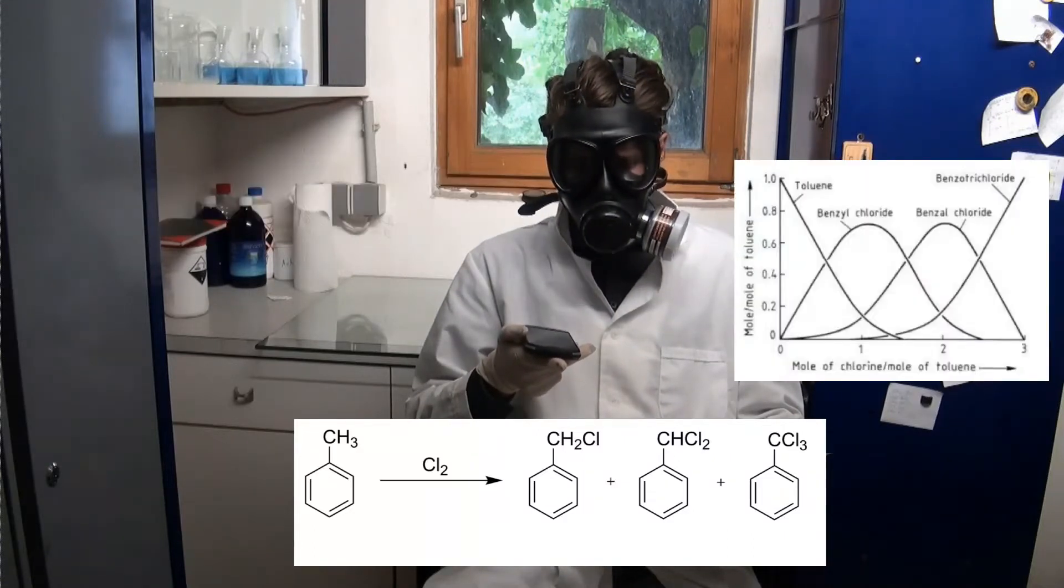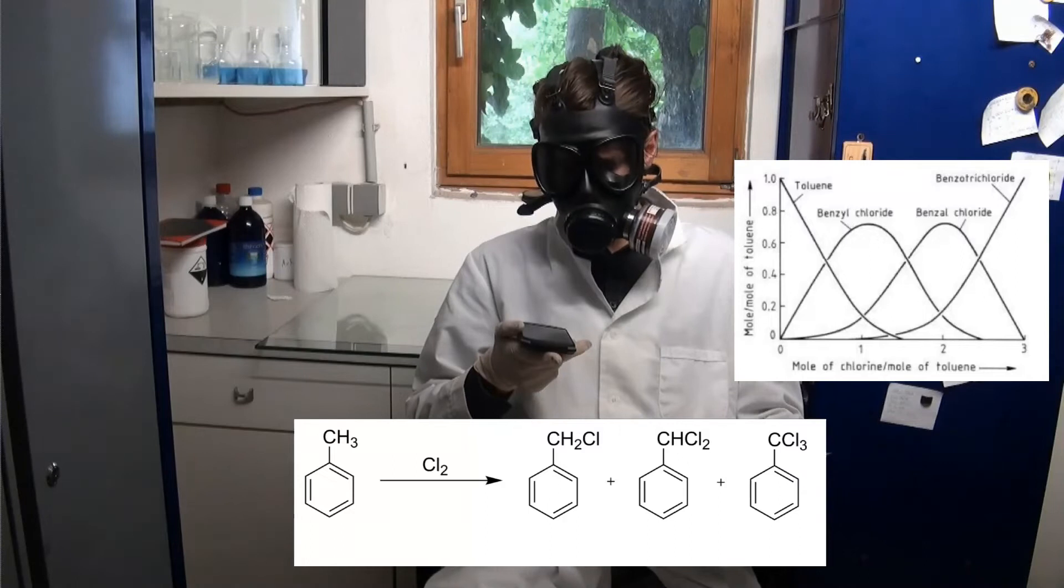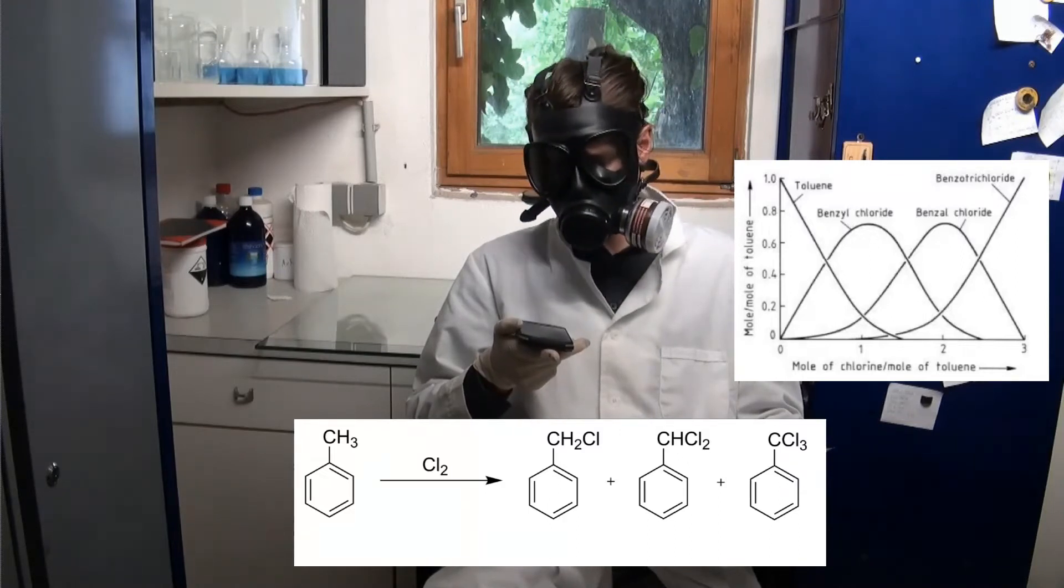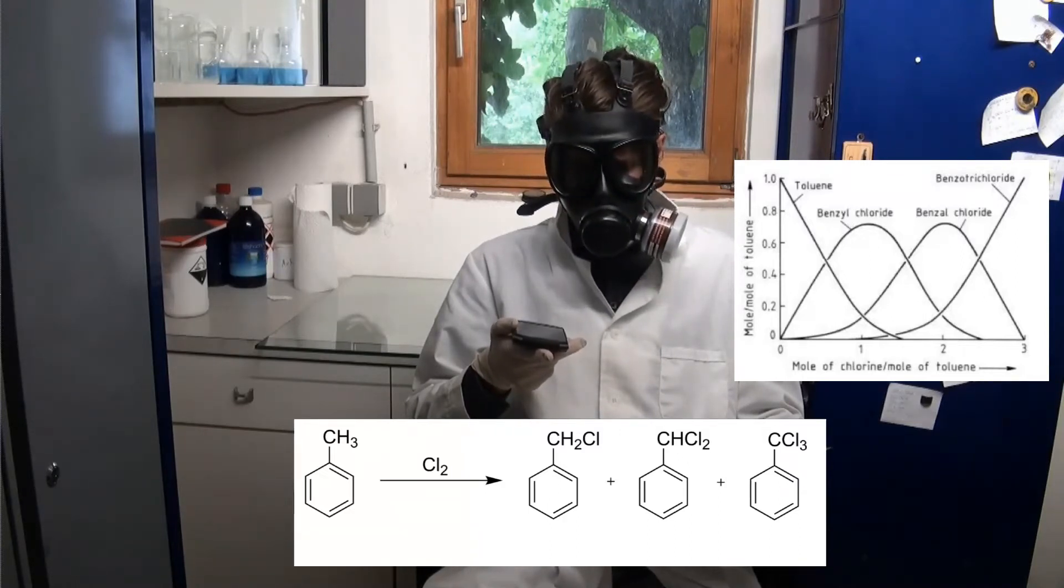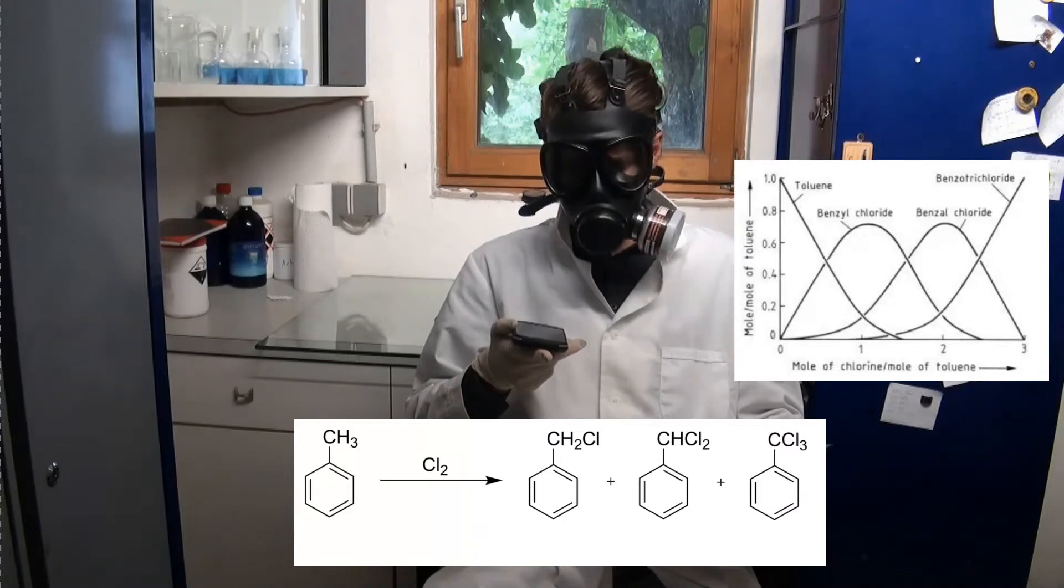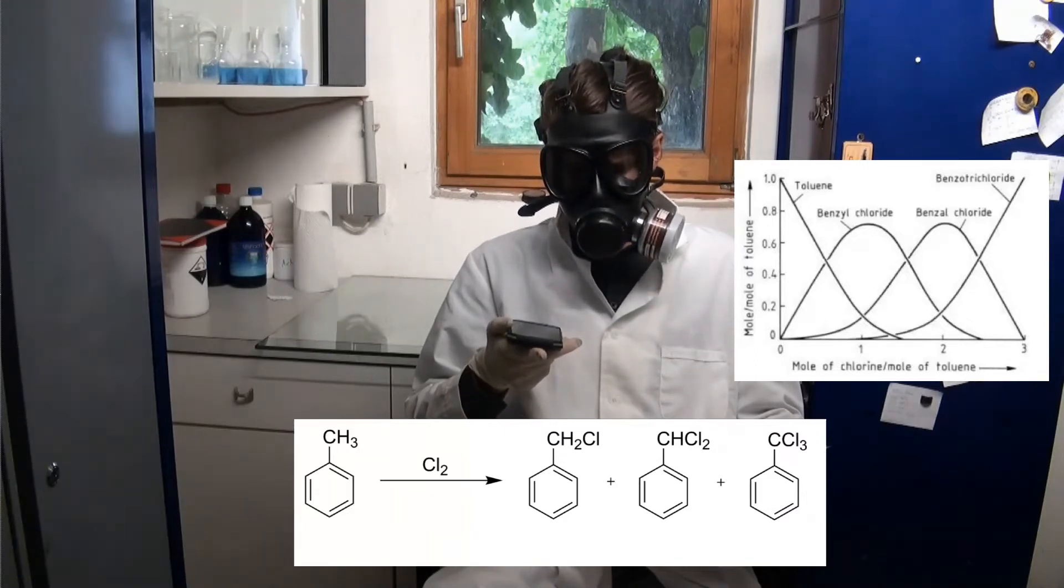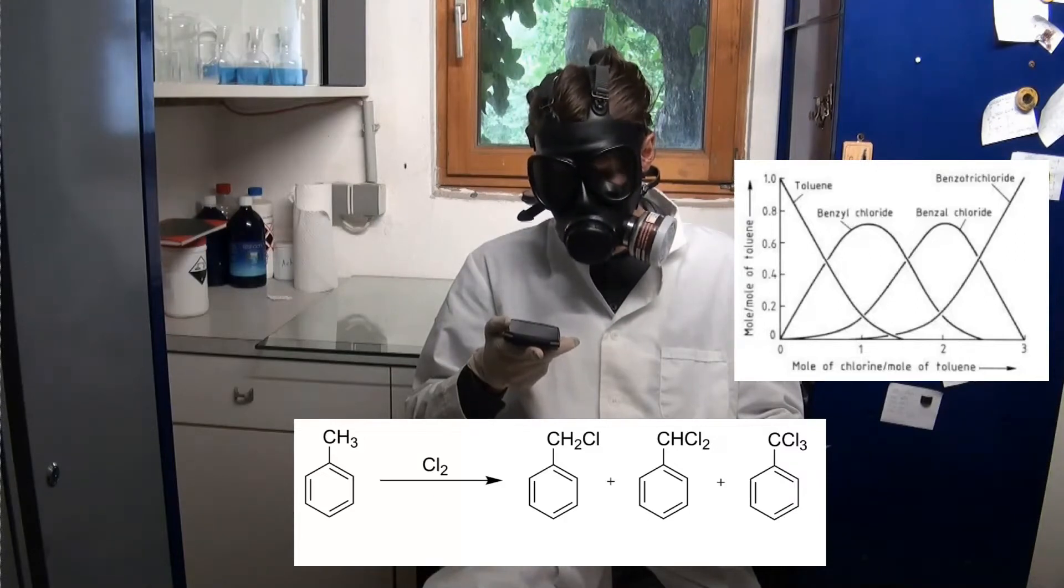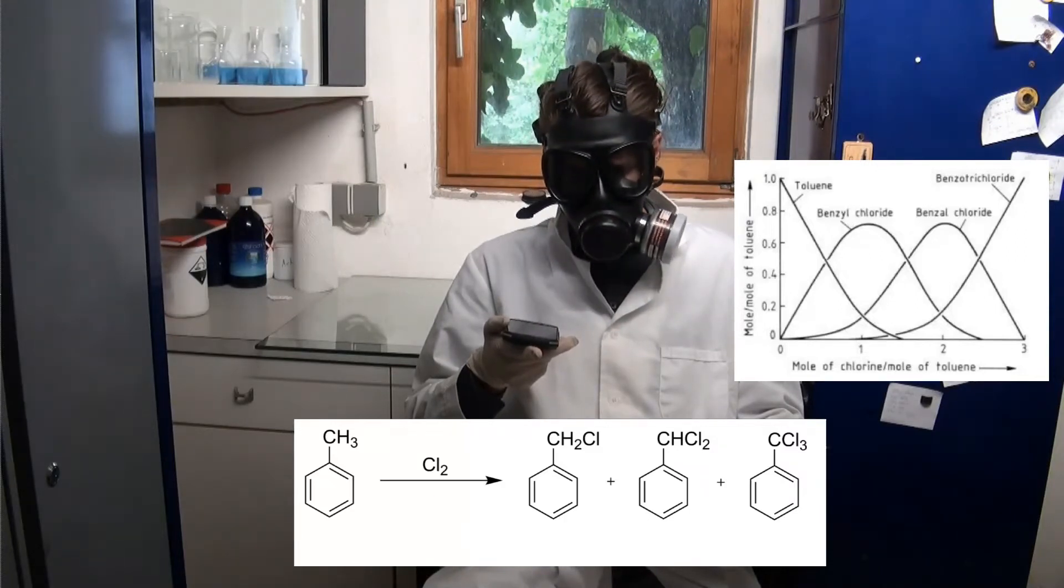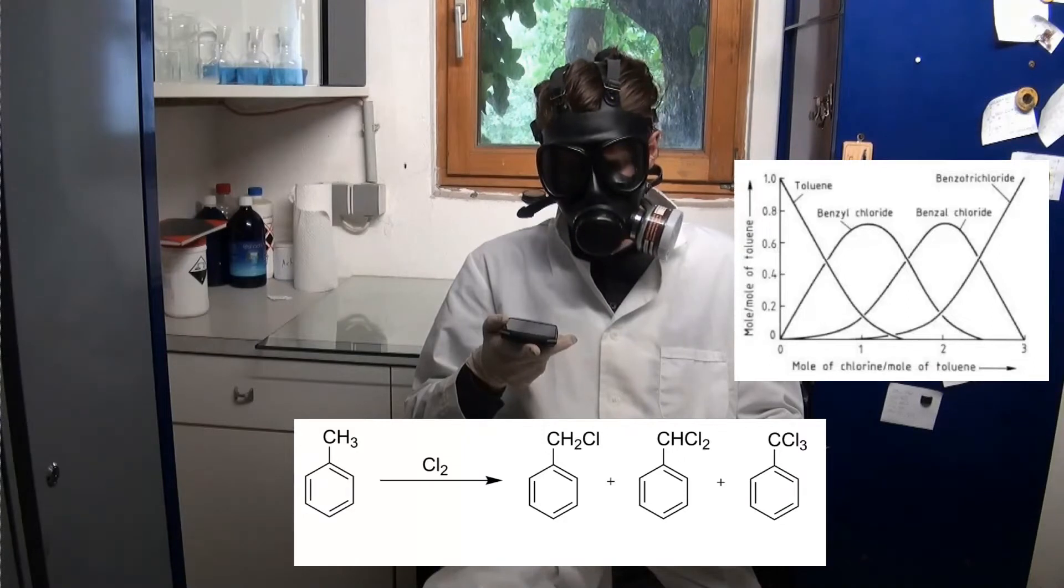The molar ratio of chlorine to toluene hereby affects the product. One mole of chlorine to one mole of toluene mostly yields benzyl chloride. Two to one mainly yields benzal dichloride, and three to one mainly benzotrichloride.